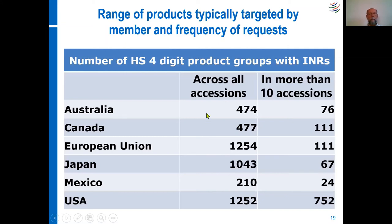One country consolidated INRs in 474 product groups — about one third of the whole range of HS four-digit products. If you look at a bigger country like the EU or the US, you see that these countries basically asked for concessions in all product categories. Japan is slightly less so, and Canada is about like Australia. Australia and Canada typically ask for better market access in agricultural and mining products, as these two countries are major exporters of mining and dairy products.